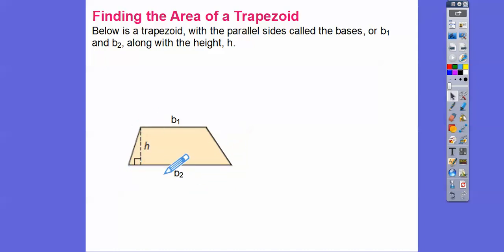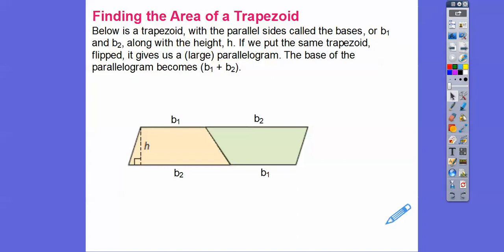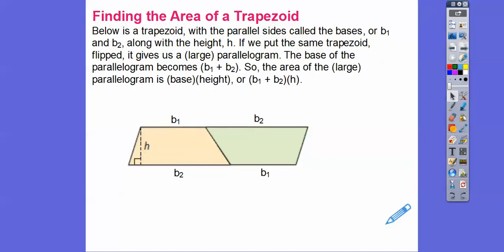What I'm going to do is copy this trapezoid, flip it upside down, and slide it over here. If we put that same trapezoid flipped, it gives us a very large parallelogram. The base of the entire parallelogram is the sum of these two bases — base 1 plus base 2. So we know the area of a parallelogram is the product of its base, which is B1 plus B2, times the height.